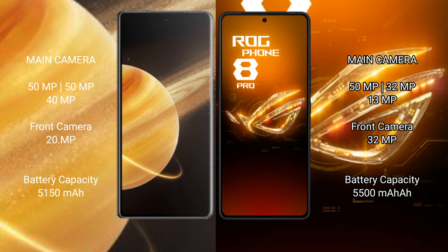Honor Magic V3 features a triple camera setup: 50MP main, 50MP ultrawide, and 40MP periscope telephoto lens, with a 200MP front camera. Asus ROG Phone 8 Pro features a triple camera setup: 50MP main, 32MP ultrawide, and 13MP telephoto lens, with a 32MP front camera.